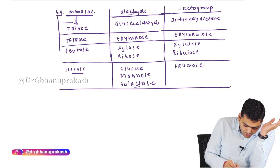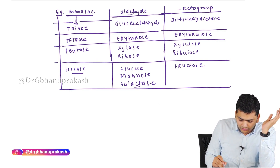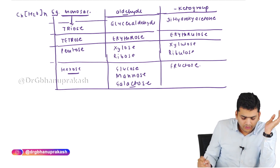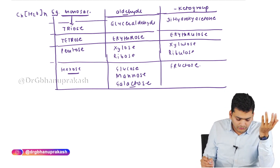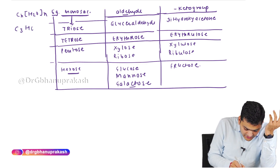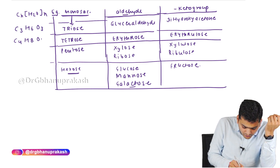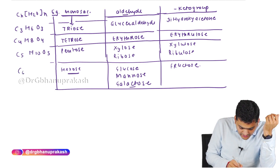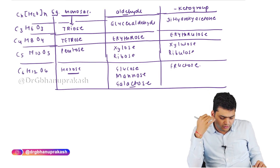The universal formula CnH2On gives us: triose → C3H6O3, tetrose → C4H8O4, pentose → C5H10O5, and hexose → C6H12O6. These are the formulas for triose, tetrose, pentose, and hexose.